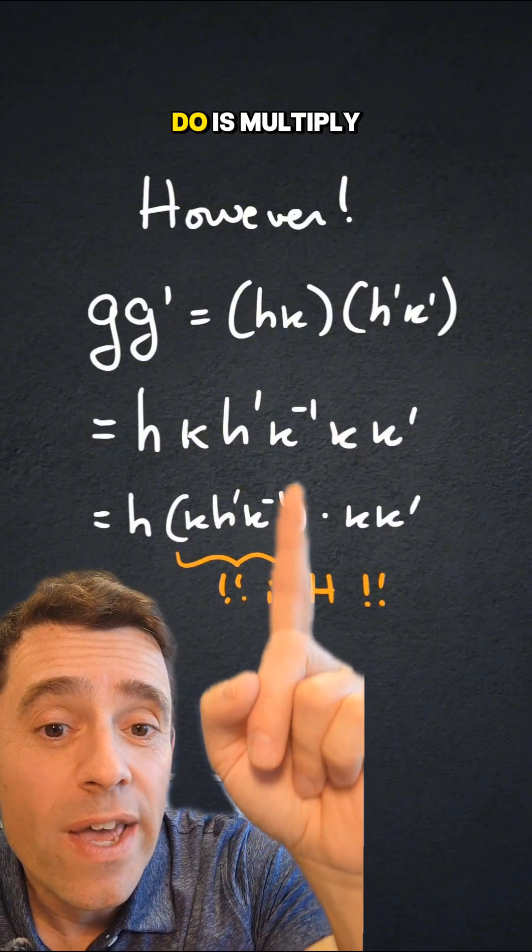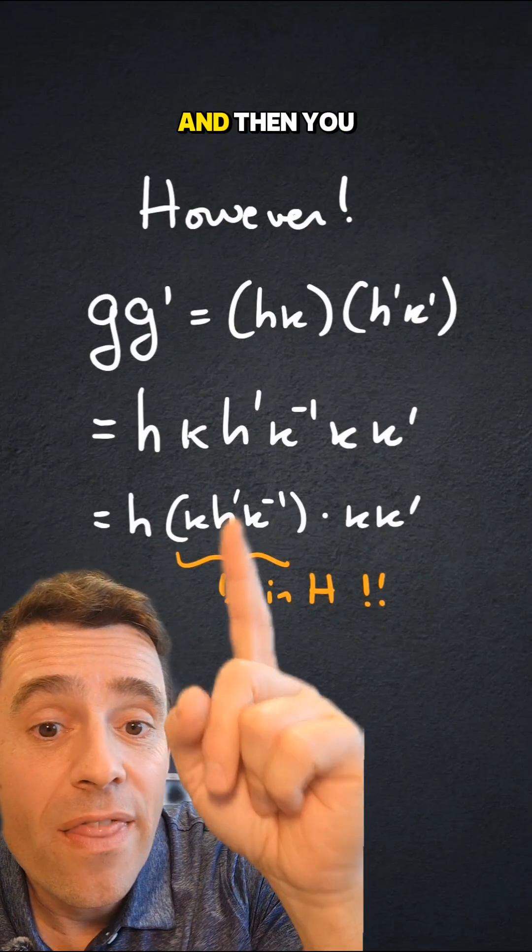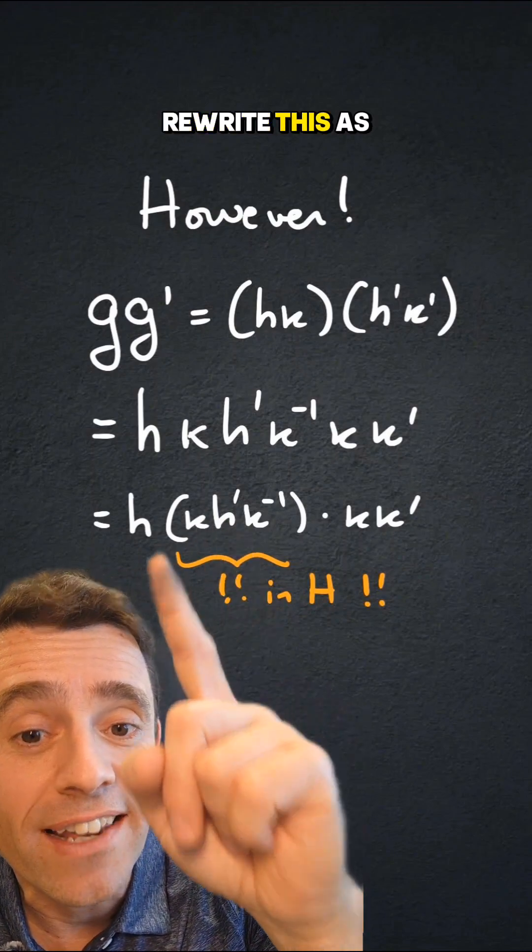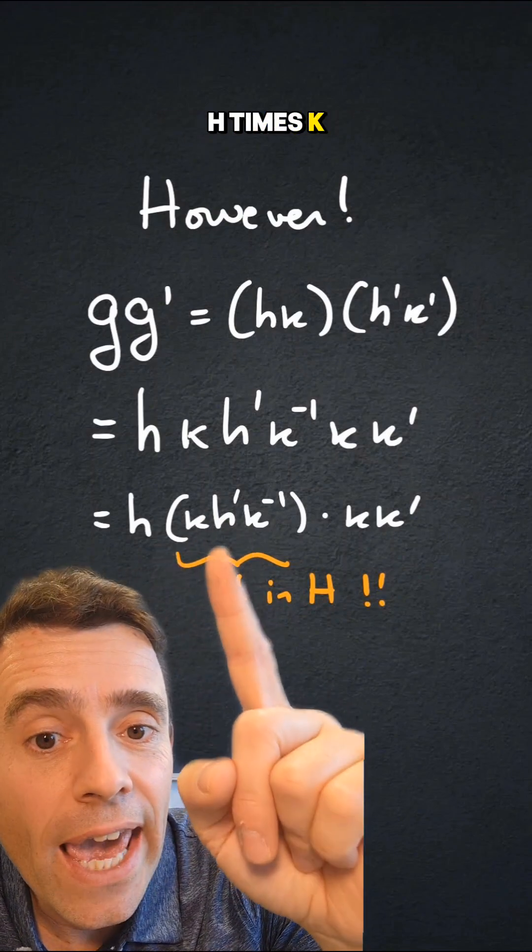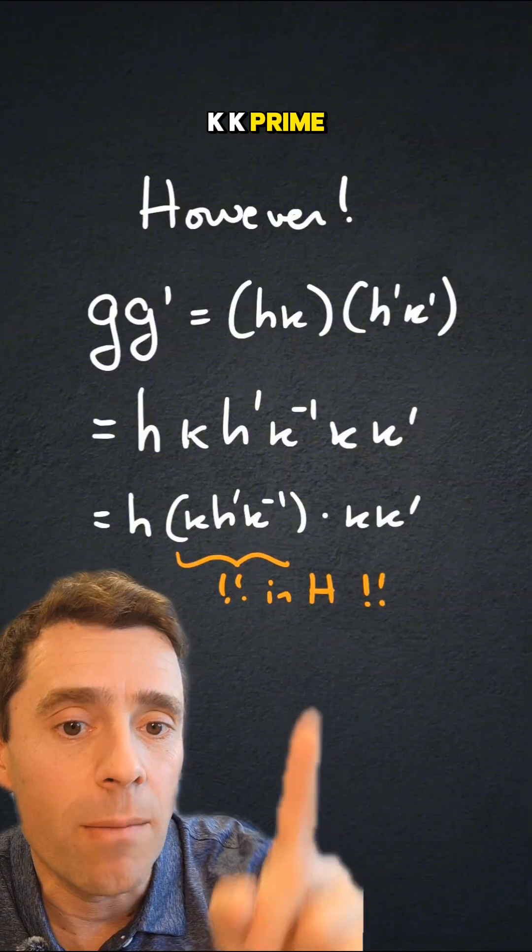by k inverse times k, and then you see I can rewrite this as h times kh' k inverse and times kk'.